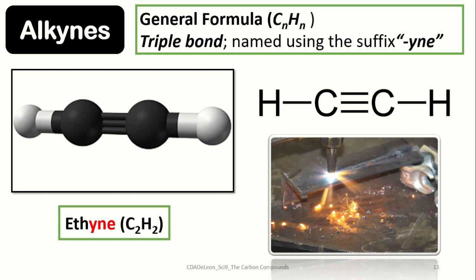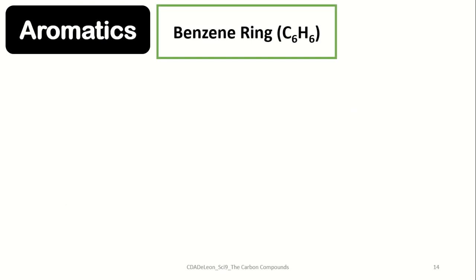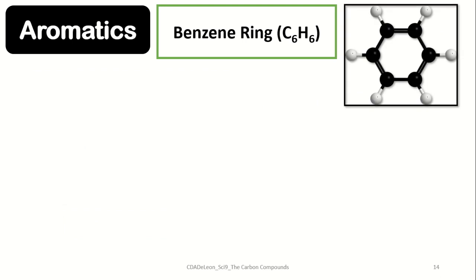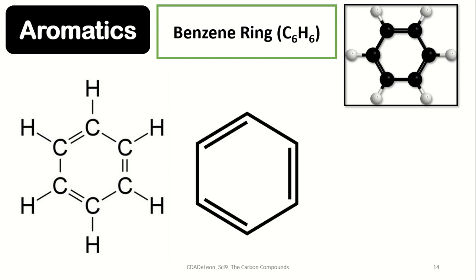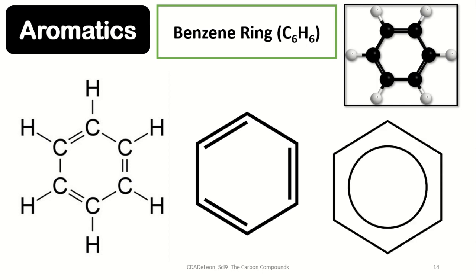Now let us proceed to aromatic hydrocarbons. The term aromatics is associated with the benzene ring, which has a formula of C6H6 — six carbon atoms and six hydrogen atoms. The term aromatic was coined from the word aroma, as all aromatic compounds are associated with a strong odor. A key characteristic of the benzene ring is that it has an alternating number of single and double bonds — three single bonds and three double bonds — within its carbon atoms.